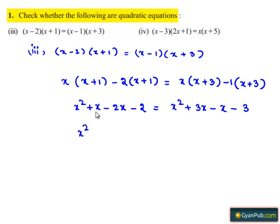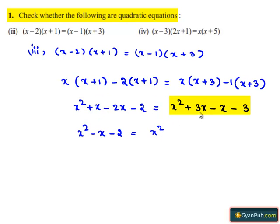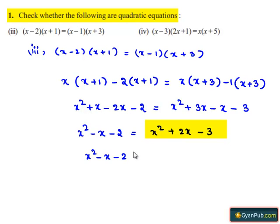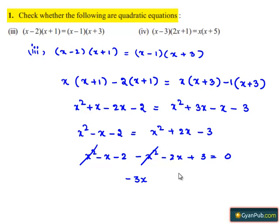On the left hand side, we have x squared plus x minus 2x, which becomes minus x, and minus 2. On the right hand side, we have x squared plus 3x minus x, which becomes plus 2x, and minus 3. Now let us transpose the terms on the right hand side to the left hand side. This becomes minus x squared minus 2x plus 3 equals 0. So x squared and x squared cancel, and minus x minus 2x becomes minus 3x minus 1. So the final equation obtained is minus 3x minus 1 equals 0.